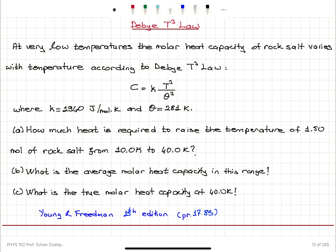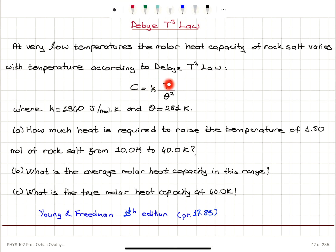Debye T-cube law. At very low temperatures, the molar heat capacity of rock salt varies with temperature according to the Debye T-cube law: C = K·T³/θ³, where K is 1940 joules per mole Kelvin and θ is 281 Kelvin. θ is actually the Debye temperature.